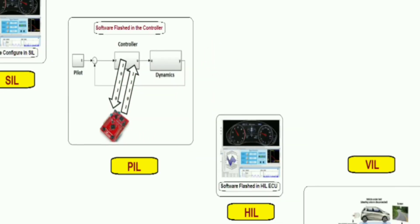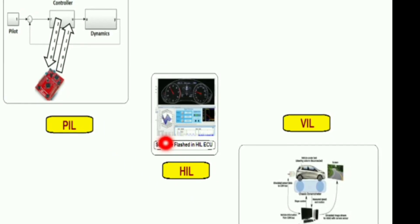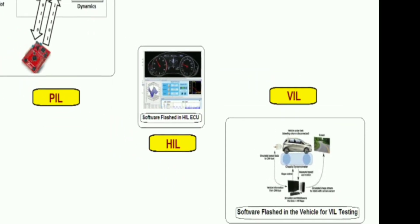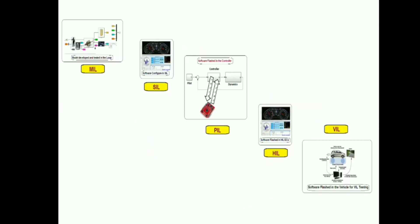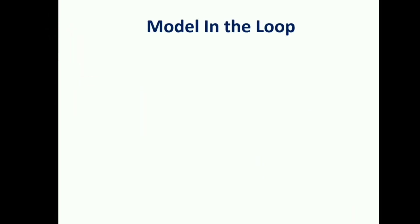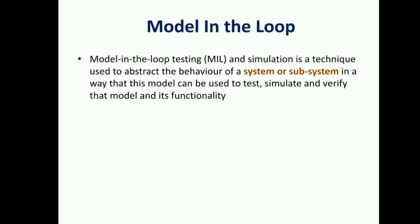After PIL, it will be HIL — Hardware in the Loop — and at the end it is VIL — Vehicle in the Loop. This is the complete flow we are going to cover in this playlist on 'in the loop' testing. This is our second video, which is Model in the Loop. The previous video gave the introduction to the 'in the loop' concept, and now this is Model in the Loop. Model in the Loop testing and simulation is a technique to abstract the behavior of a system or subsystem so that the model can be tested and its functionality verified.